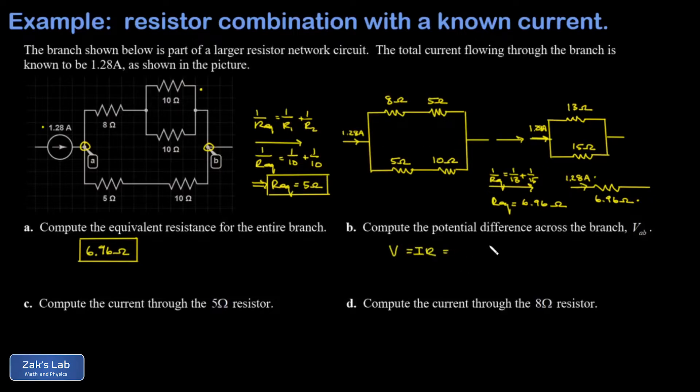So we just write down V equals IR. My current is 1.28 amps, my resistance is 6.96 ohms, and I get a potential difference of 8.91 volts.